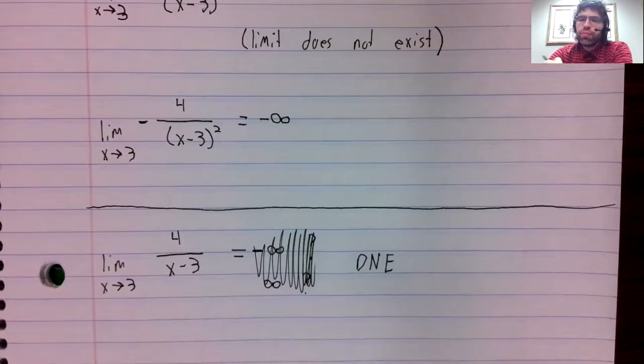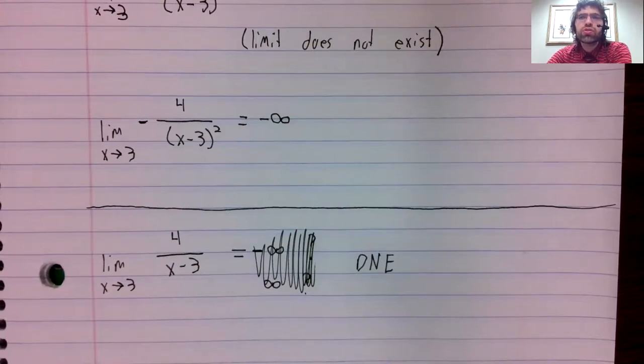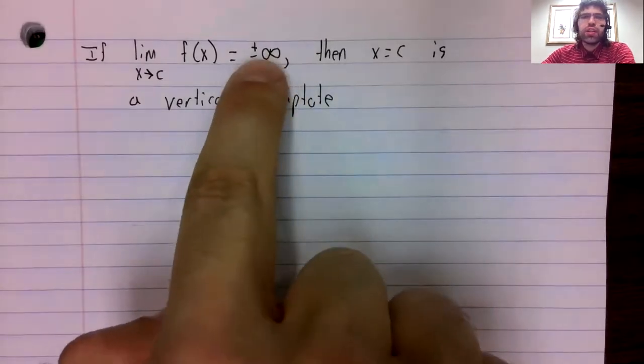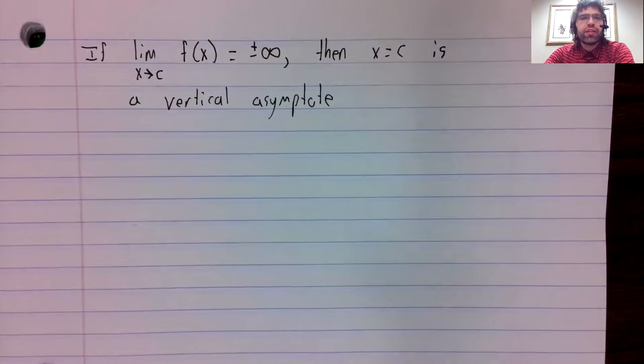One final comment in this video: these infinite limits are closely related to vertical asymptotes. If we have an infinite limit, that will appear graphically as a vertical asymptote, either infinity or negative infinity.